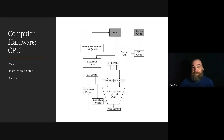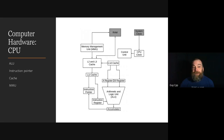L1 cache is typically only a few kilobytes, while L2 and L3 cache are a few megabytes. Each core in the CPU has its own L1 cache, while L2 may be shared between pairs of cores and L3 may be shared between all cores. Caches are part of the CPU package. The memory management unit manages the data flow between RAM and the CPU.